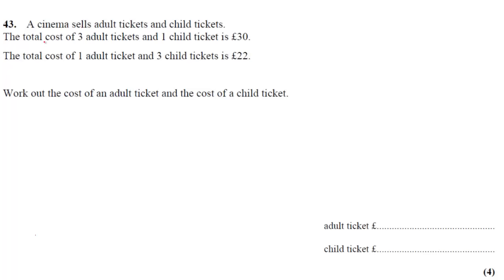This is question number 43. The question says the cinema sells adult tickets and child tickets. The total cost of 3 adult tickets and 1 child ticket is £30.